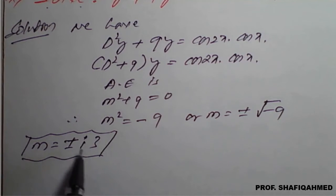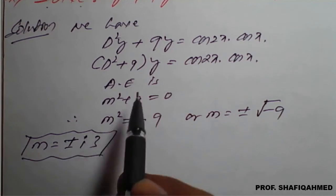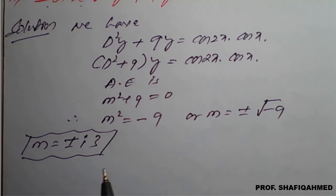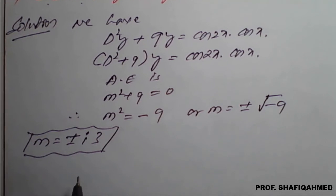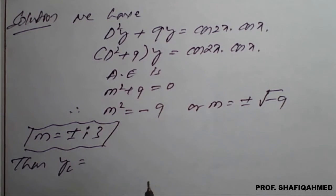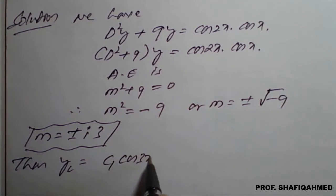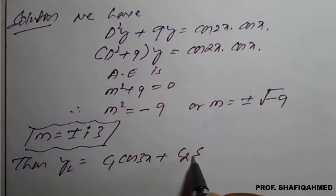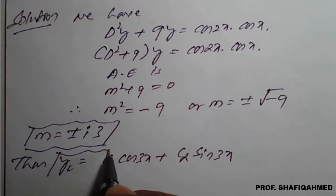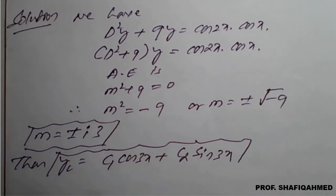Since we got two roots from m², and the roots are complex with no real part, the complementary function is: yc = c1·cos(3x) + c2·sin(3x). This is our complementary function.